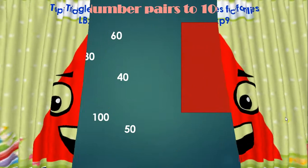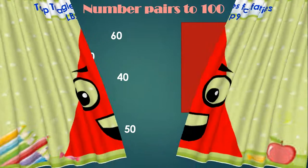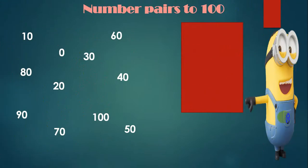Let's see number pairs to 100. As you can see, these are all the decade numbers that are the multiples of 10 and we have to find the number pairs to 100. I repeat, the number pairs to 100 are a pair of two numbers that when added together gives us 100.